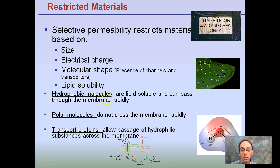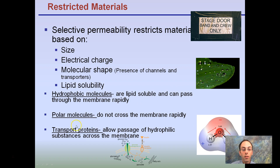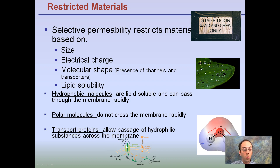Hydrophobic materials are lipid soluble and can pass right through the membrane rapidly. Polar molecules do not cross the membrane very rapidly — and polar, remember, think water. Lipids are kind of like waxy coatings. Transport proteins allow passage of hydrophilic substances across the membrane. These transport proteins are those things we saw embedded in the membrane — they can allow certain things to come through.